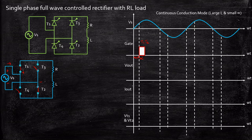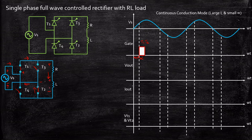So the current starts flowing through this path, through the load in this direction, and returns to the source. The output voltage is plus and minus because the current is flowing from upward to downward direction — that is the convention we have considered. One important point is that the inductor starts charging with a polarity plus and minus during the positive half cycle.